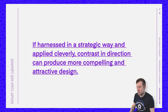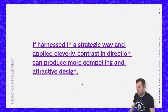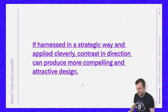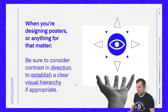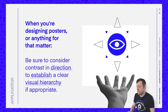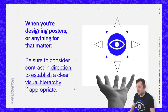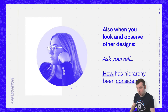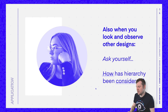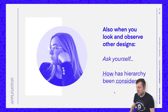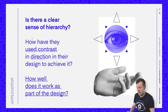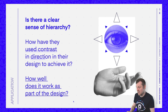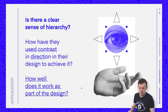If harnessed in a strategic way and applied cleverly, contrast in direction can produce more compelling and attractive design. So in application, when you're designing posters or anything for that matter, be sure to consider contrast in direction to establish a clear visual hierarchy, if appropriate. Also, when you look and observe other designs, ask yourself: how is hierarchy being considered? Is there a clear sense of hierarchy? How have they used contrast in direction in their design to achieve it? And how well does it work as part of the design?